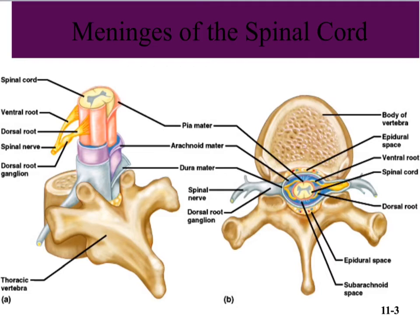The brain is enclosed in protective meninges layers, and the same is true for the spinal cord. We have the same three layers: the pia mater attached right to the cord, then we have the cerebrospinal fluid surrounding that, the arachnoid mater holding that fluid in, and then the dura mater, the toughest layer, on the outside.